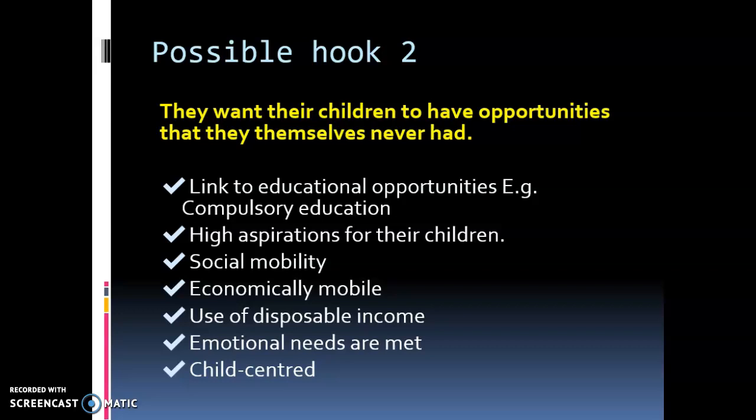Looking at possible hook number two: parents 'want their children to have opportunities that they themselves would never have had.' You could link this to educational opportunities — for example, compulsory education. You could talk about aspirations for children or social mobility, and the fact that we have a lot more socially and economically mobile movements within families. You've also got the rise in dual-earner families from topic one — the division of labour — meaning families are better off with more disposable income to invest in their children and meet their emotional needs, very much in a child-centred way.